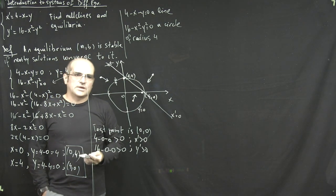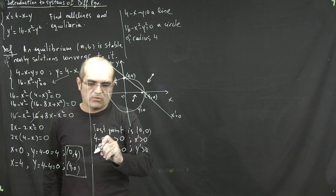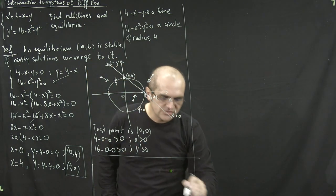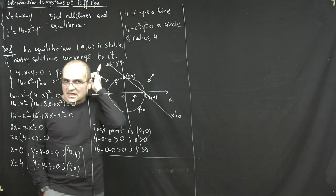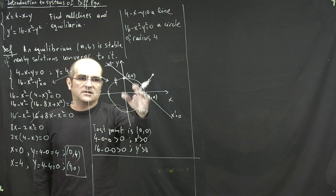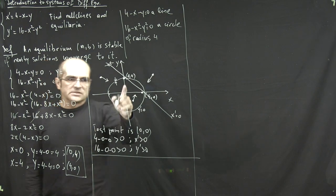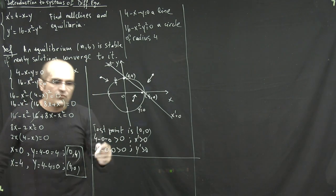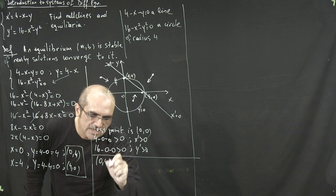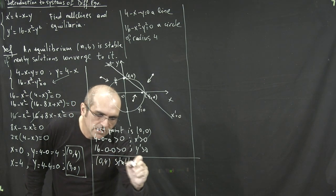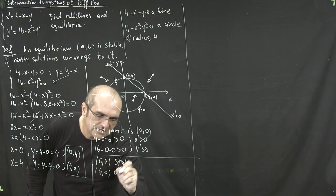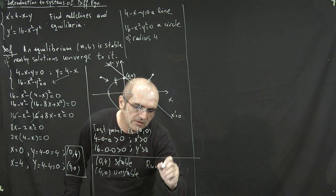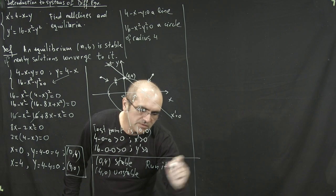As for stability, just run the system with the plotter. You will see that (0, 4) is the stable equilibrium point and (4, 0) is unstable.